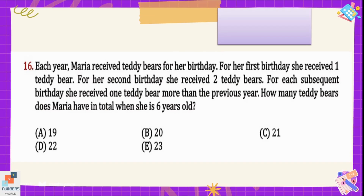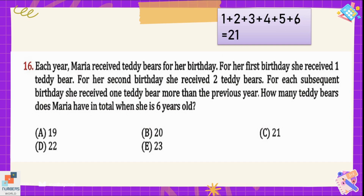Question number 16: each year Maria received teddy bears for her birthday. For her first birthday she received 1 teddy bear, for her second birthday 2 teddy bears, and for each subsequent birthday she received 1 more than the previous year. How many teddy bears does Maria have in total when she is 6 years old? For every birthday she received 1 more than the previous year, so counting up to age 6, the total is equal to 21. Option C is the correct option.